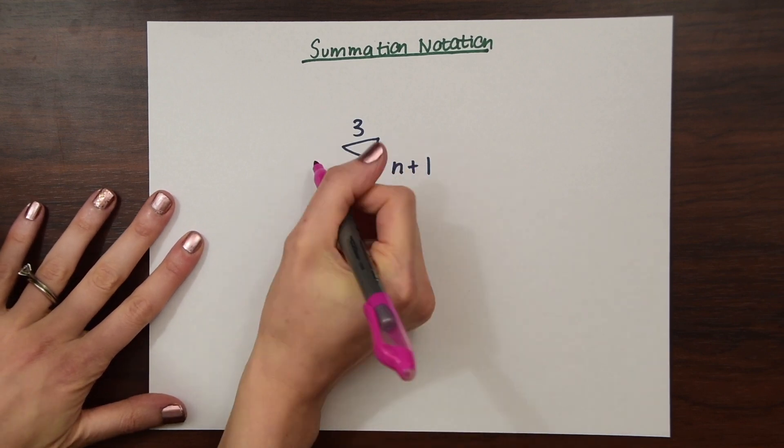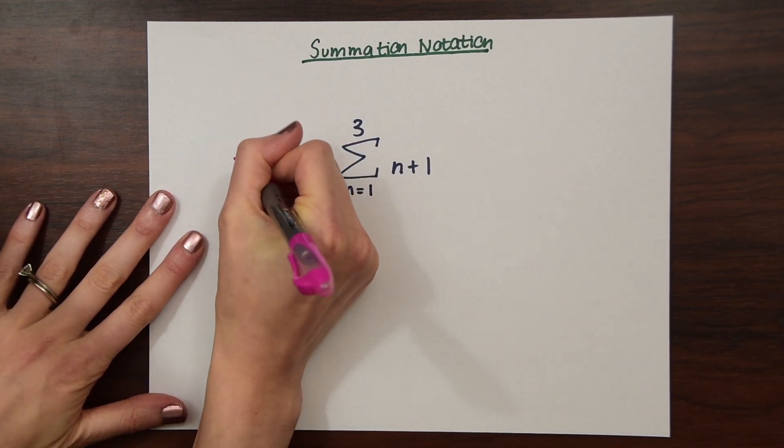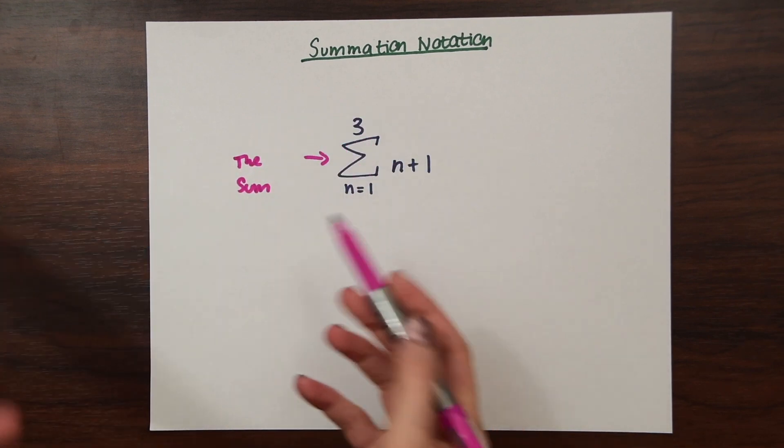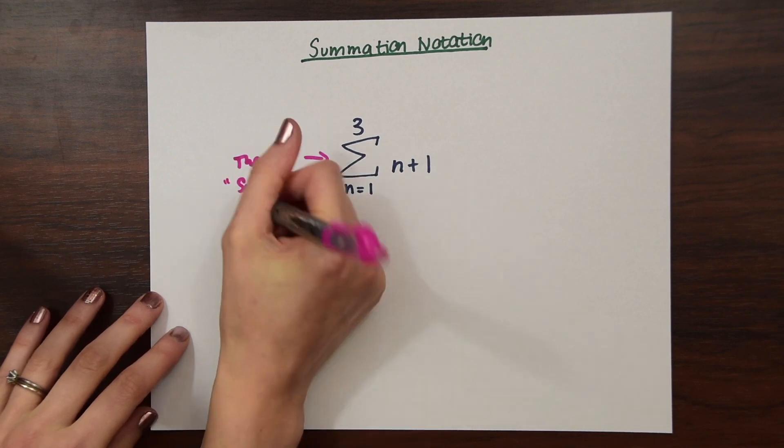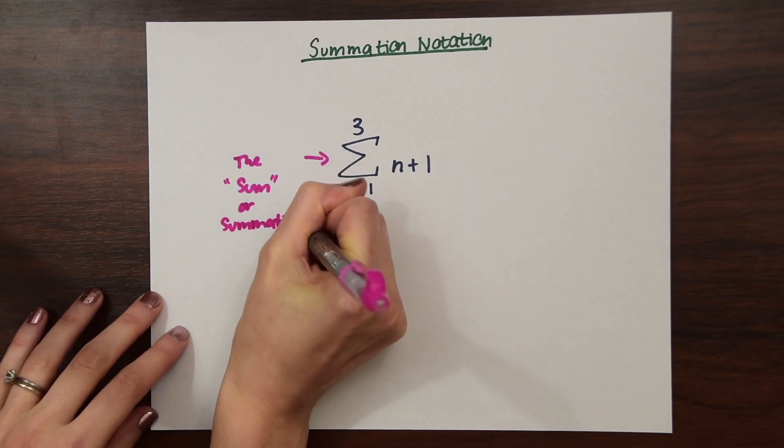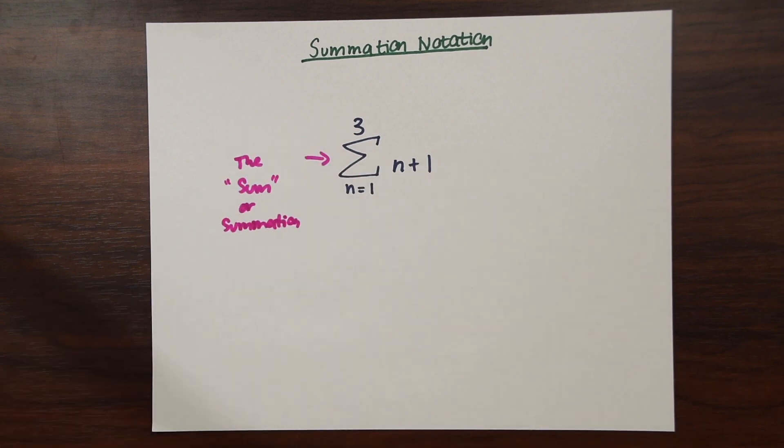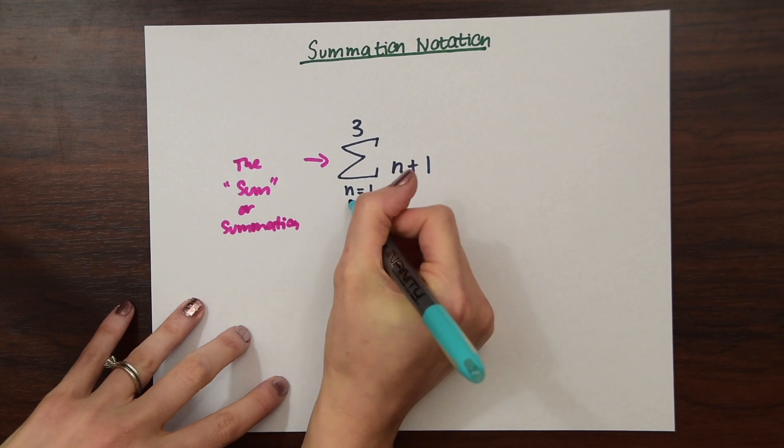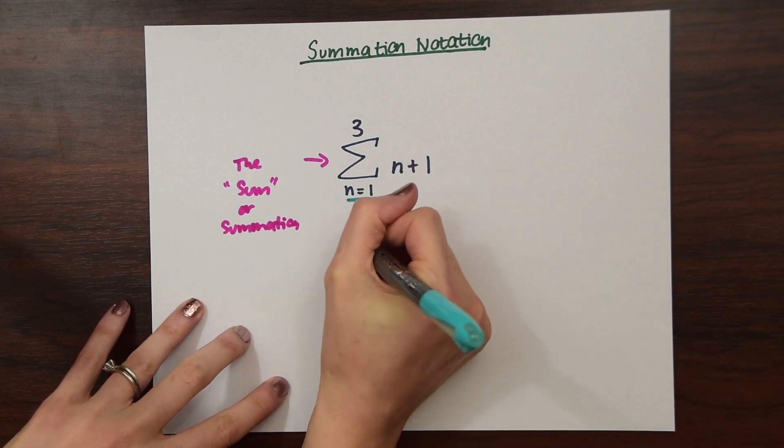The sigma is going to mean the sum. The sigma is the summation, the sum of this expression right here. So next we have these numbers above and below the sigma. Down here, this is our lower limit.